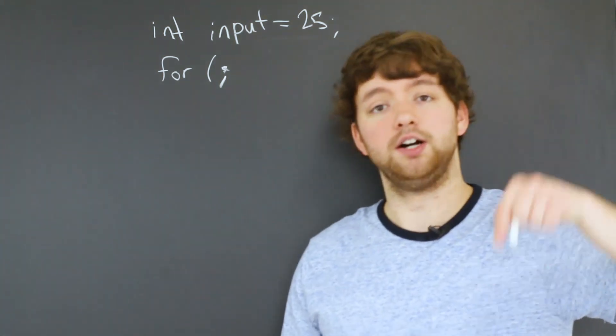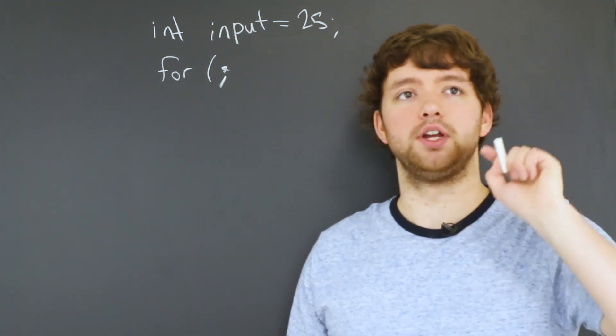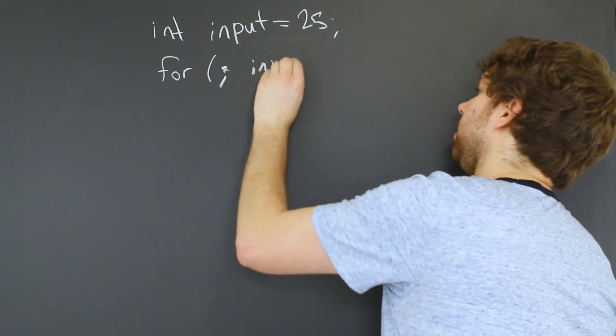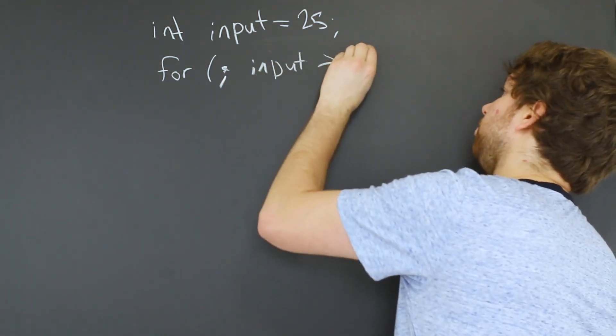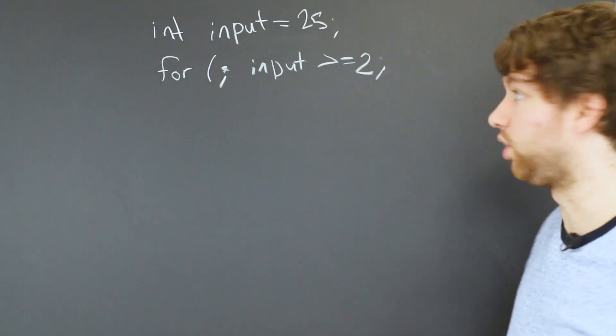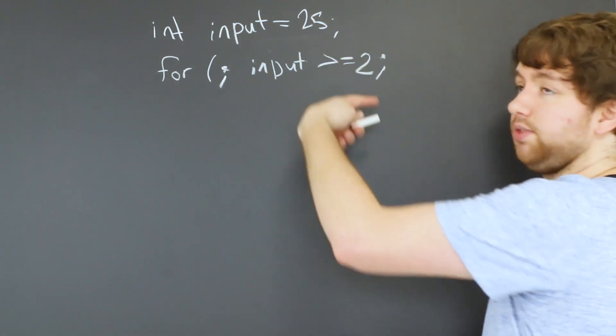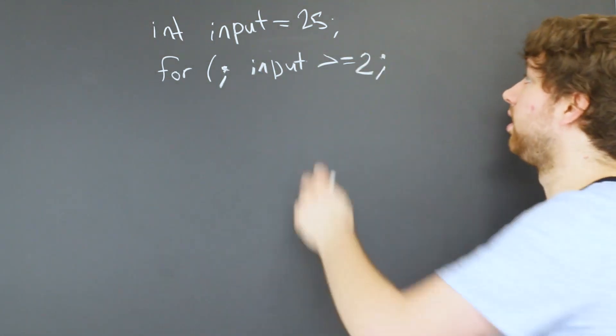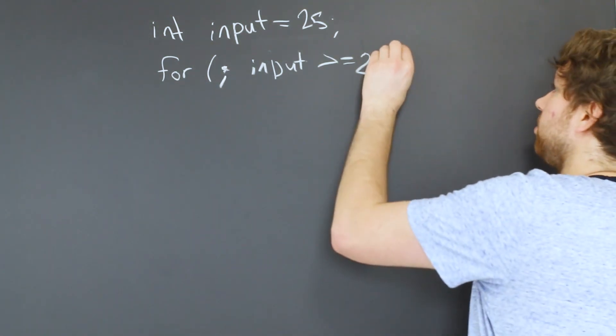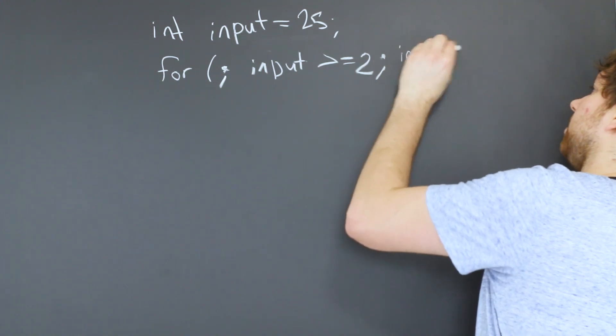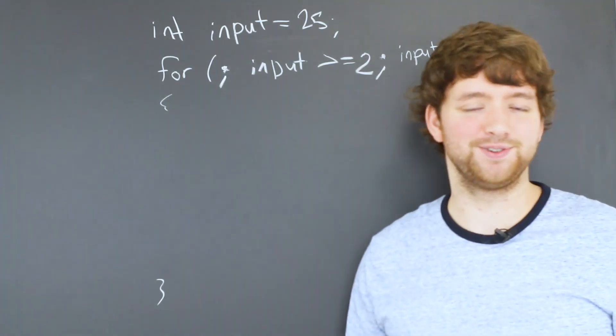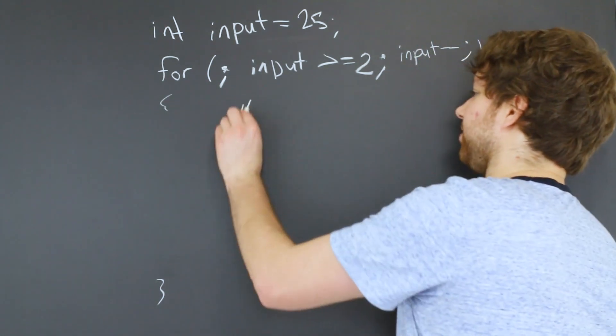And now we're going to go down until the number is one. So as long as input is greater than or equal to two, we're going to keep going. Then how are we going to get there? We're going to decrement input one after every iteration of this loop. So we're going to say input minus minus. And then we have our curly braces. And because this is pseudocode, I don't actually have to write out the algorithm. I could just say figure out if prime.